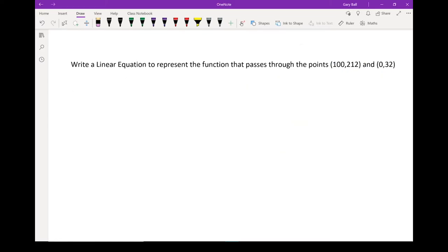There's my equation in point-slope form. One more time. Let's write a linear equation to represent the function that passes through 100 comma 212 and 0 comma 32.